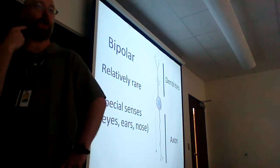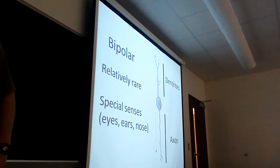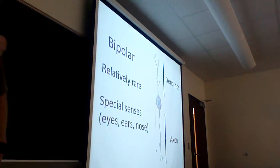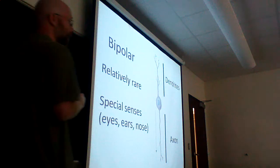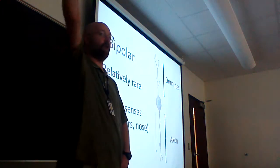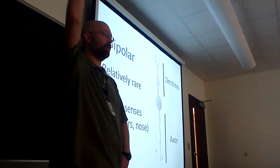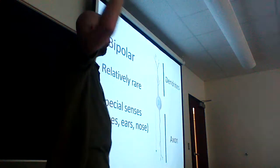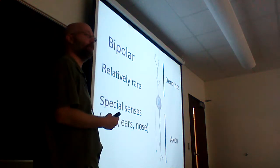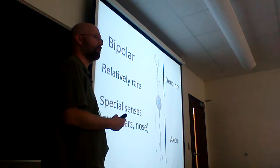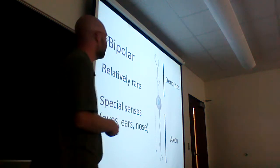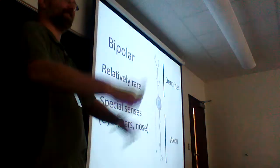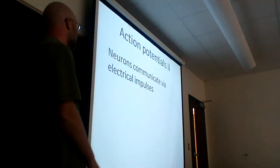Bipolar neurons are relatively rare and are often associated with the special senses — senses associated with your head. The example in vision would be the rods and cones. Rods are black and white; cones are color — C for color.